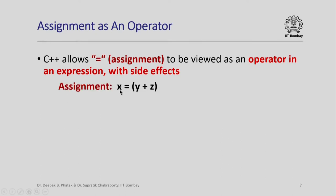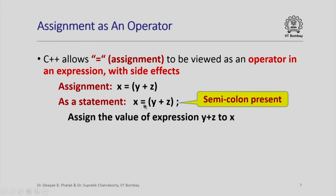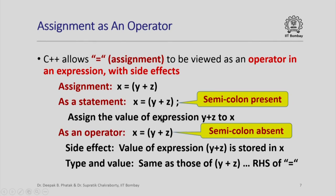Let us look at an example. Suppose I have the assignment x = y + z. If I put a semicolon after this, it becomes an assignment statement. However, if I use it without a semicolon as an expression, the equals symbol is used as an operator. This becomes an assignment expression, and like any other expression it has a type and value — but it also has a side effect: the value of y + z gets stored in variable x. The type and value of this entire assignment expression is the type and value of whatever appears on the right-hand side, which in this case is y + z.